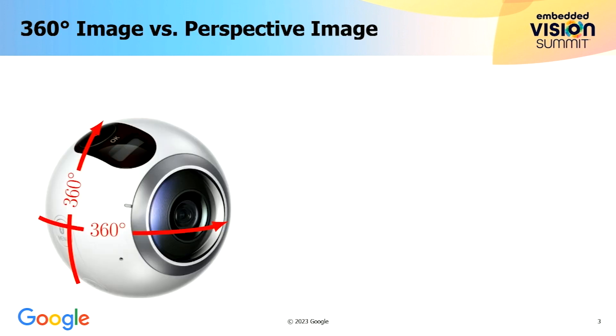Before I dive into detail about how we perform visual recognition, let me first give a short introduction about what a 360 image looks like and what we really mean when we talk about processing 360 images. As indicated by its name, a 360 camera captures a 360-degree field of view both horizontally and vertically.